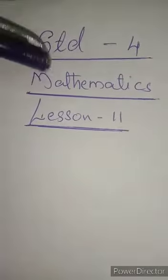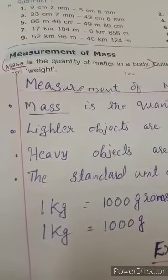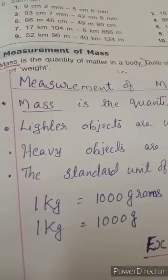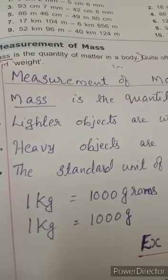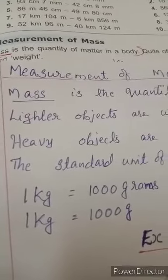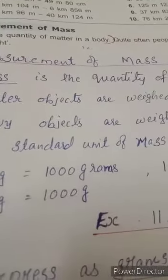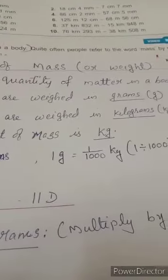Today I am going to teach you mathematics of class 4, lesson 11. Now we will start measurement of mass. Mass is the scientific name for weight. Mass is the quantity of matter in a body. Underline the word mass. Next, lighter objects are weighed in grams. For grams, we will write small g.